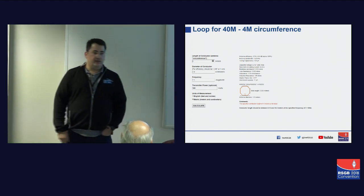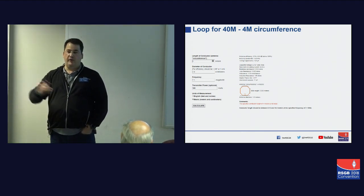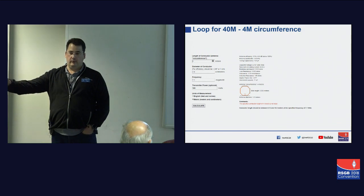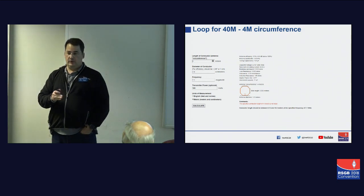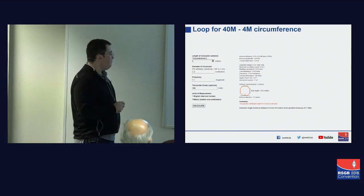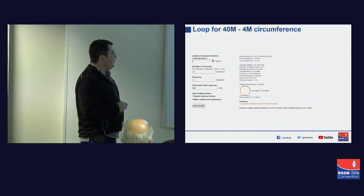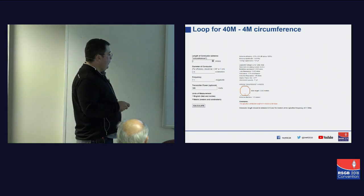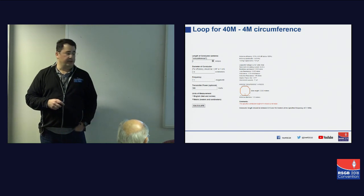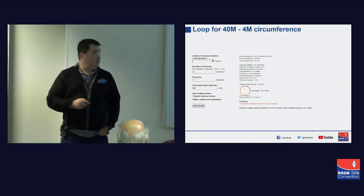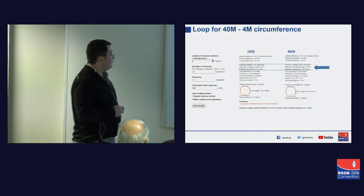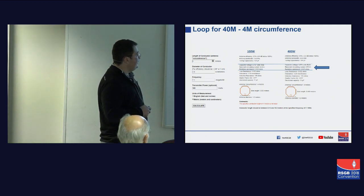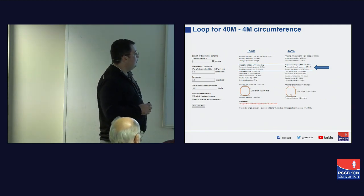So a tenth of a wavelength is the extreme of where I'd want to go when building a loop for voice. In terms of circulating current, we're now looking at 33 amps and just under 5,000 volts across the capacitor. The website is telling me this isn't an ideal size for the loop. If we now take this up to 400 watts, we can see we are going to be pushing just under 10,000 volts across the capacitor.